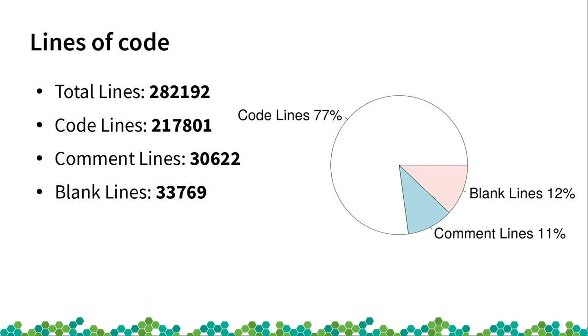The code here also includes other things related to OBS like OSC, which we can see in the lines of code. We also have Python. The total lines of code are 282,192, although not everything is code lines — 12% are blank lines and 11% are comment lines.